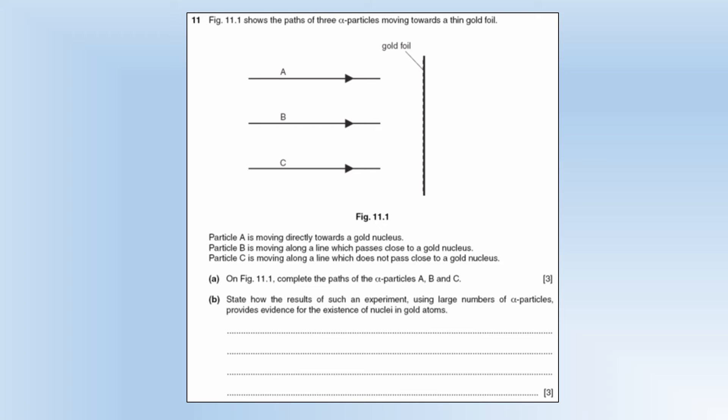So the diagram shows the path of three alpha particles moving towards a thin gold foil. So it wants us to complete the path. So they're all going to go up to the gold foil, so we can put that in straight away. It says A moves directly towards a gold nucleus, so it's going to be deflected by a large angle. It's had a head-on collision.